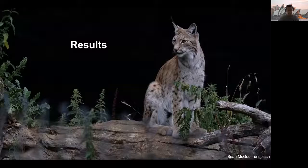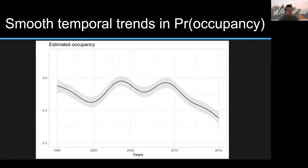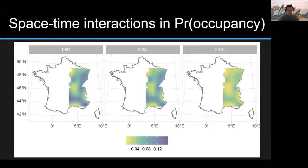Let's see some results. Occupancy increased with increasing forest cover, where forest cover is probably a proxy for prey availability. We found a non-linear trend in estimated occupancy over time, with two particularly good years — the bumps here — but a clear decrease in recent years, which might be due to collisions with cars and poaching. When we look at the probability of occupancy in space and time, this decreasing trend was confirmed, with more yellows as we go forward.